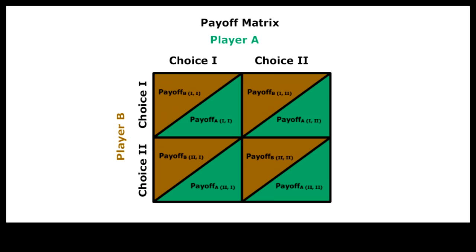Behavior to navigate such game-theoretic situations is called strategic. Strategic situations are commonly represented by a two-by-two payoff matrix.